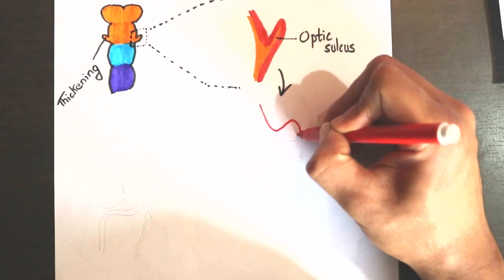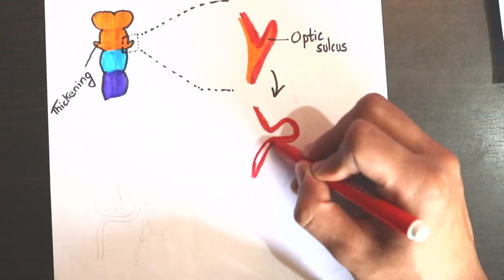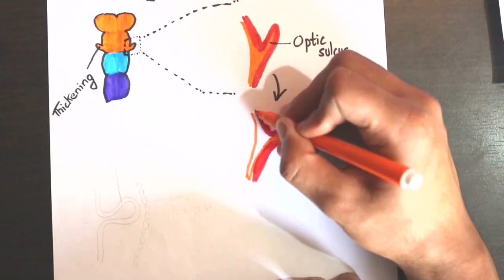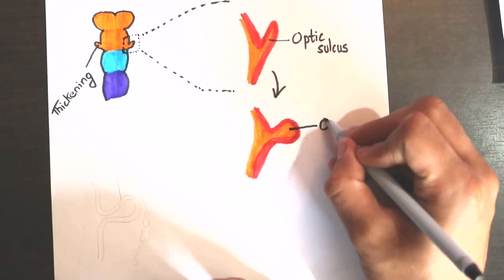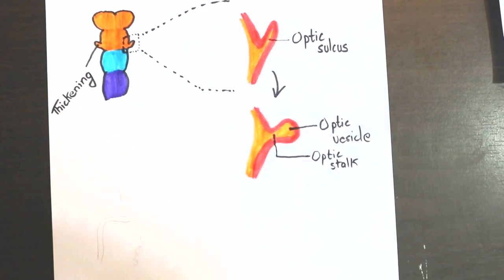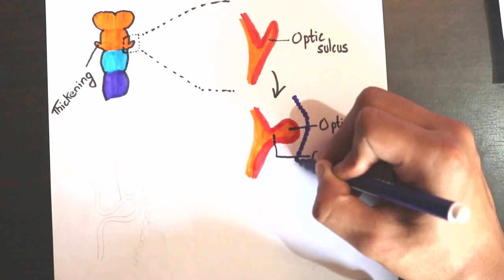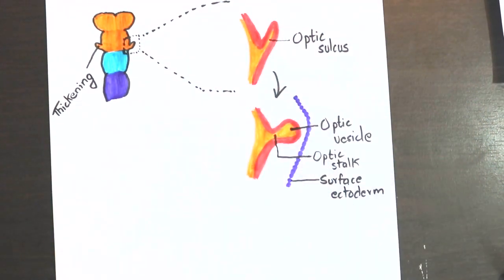The distal part of the optic sulcus enlarges to form the optic vesicle, whereas the proximal area remains as it is or gets constricted to form the optic stalk. They are surrounded by the surface ectoderm.